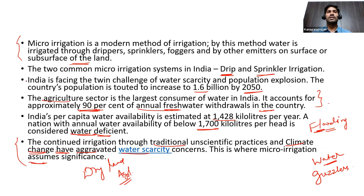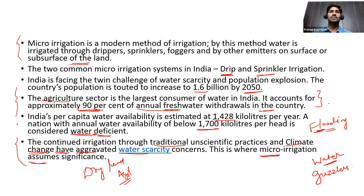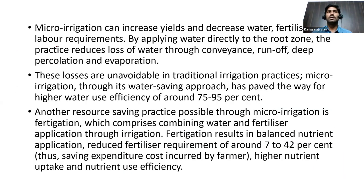Climate change, global warming, and the drying up of water bodies aggravate water scarcity concerns, especially in dryland agriculture. This is where micro irrigation assumes significance — you can use these facts to justify why micro irrigation is necessary for water conservation at this time.